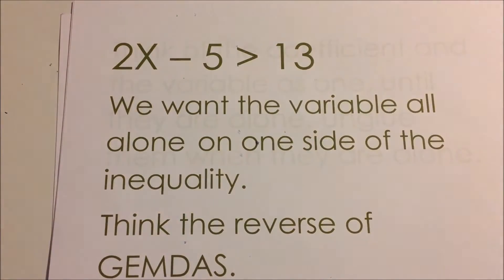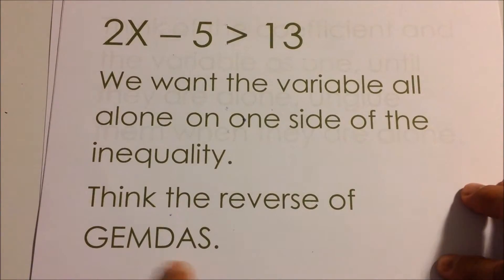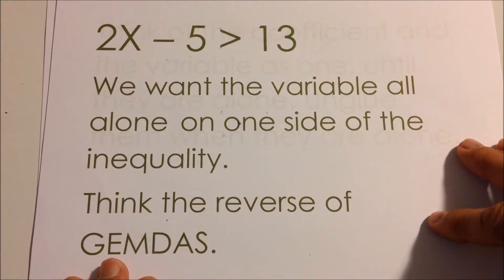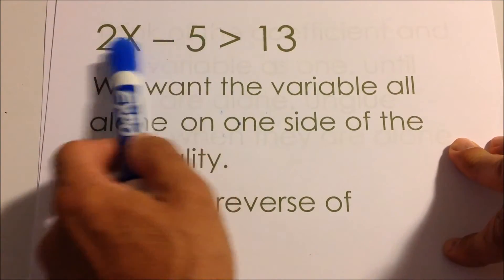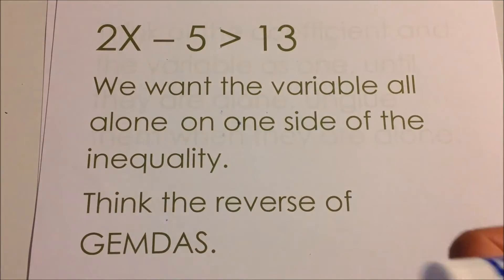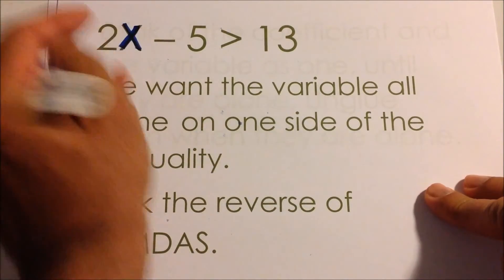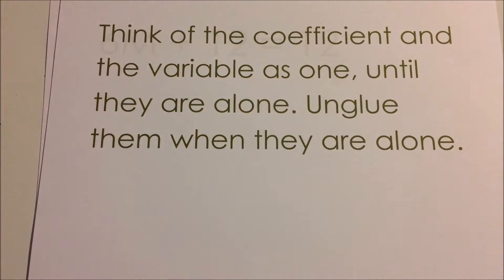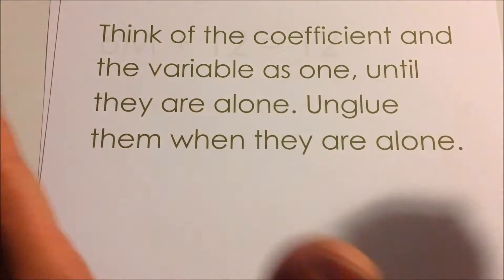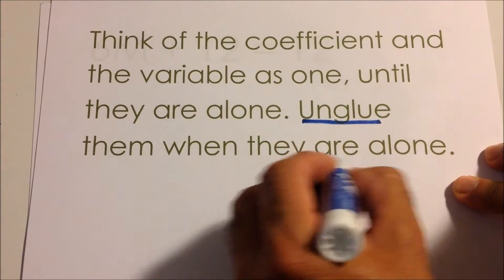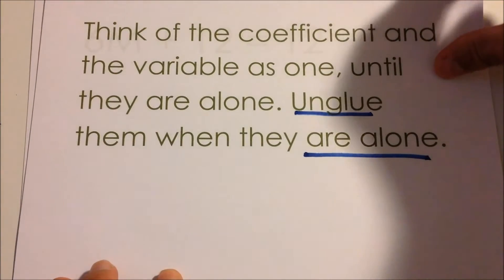Here's another way of remembering how to do the reverse of GEMDAS when we do inequalities and equations: you want to make sure the variable is alone, and you want to do any operation that's not connected to the variable first. Here we have a coefficient connected to the variable — 2x — so think of them as glued together. We don't want to unglue them until everything else is gone. Think of the coefficient and the variable as one until they are alone.